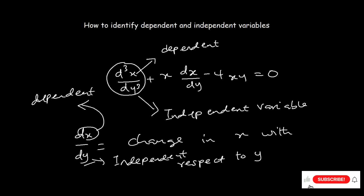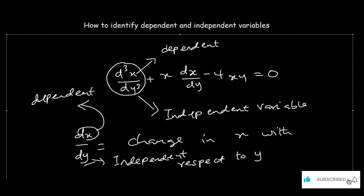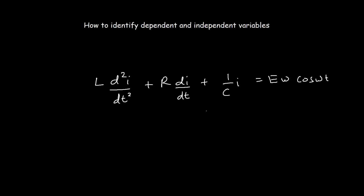Let's take another example. With this example, let's identify the dependent and the independent variables. The dependent variables are always on top and the independent variables are on the bottom. We have the second derivative of the function i with respect to t, so i here is the dependent variable and t here is the independent variable.